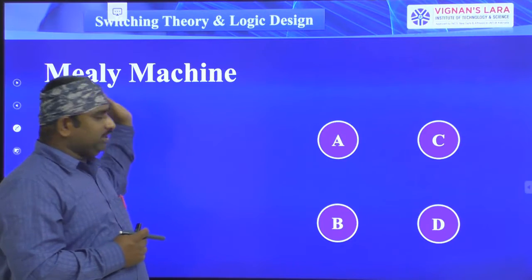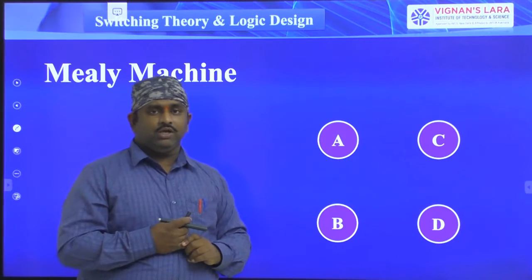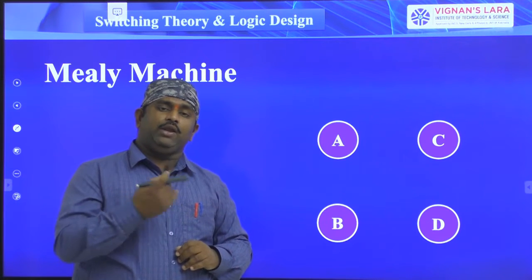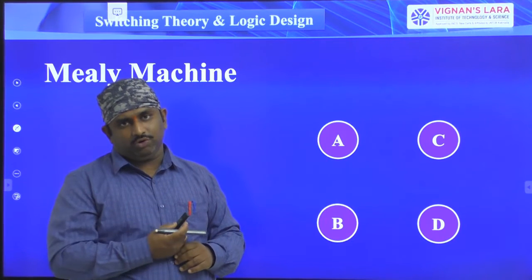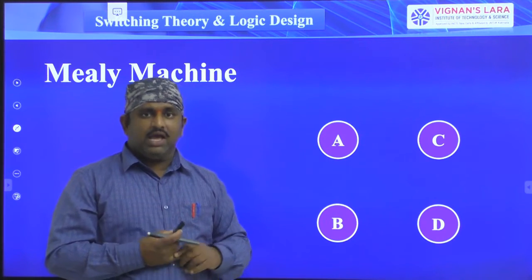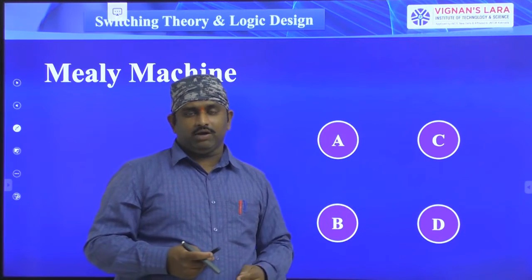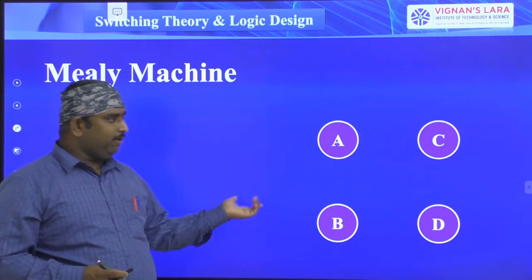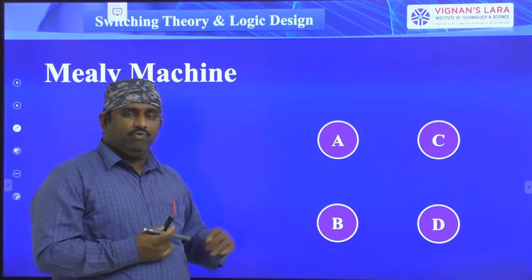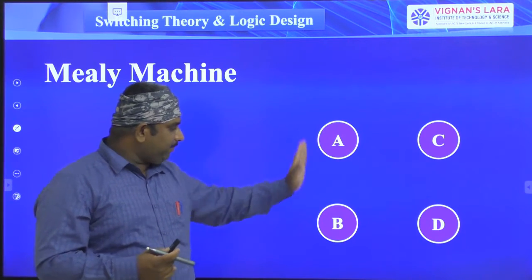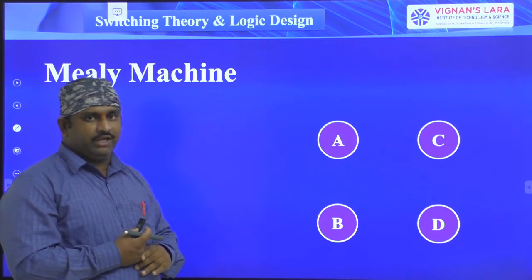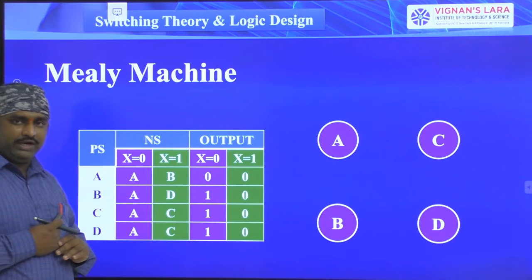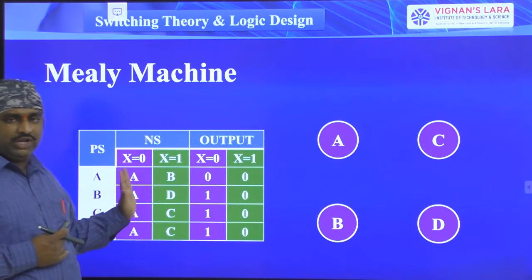Now I am taking one more example for explaining the Mealy machine concept. We have the present state and the next state, and whenever the input is equal to zero or equal to one we have two different types of next states, and we have to see the next state outputs also. I am taking four states: A, B, C, D. Now I am drawing the state diagram with the help of the state table.